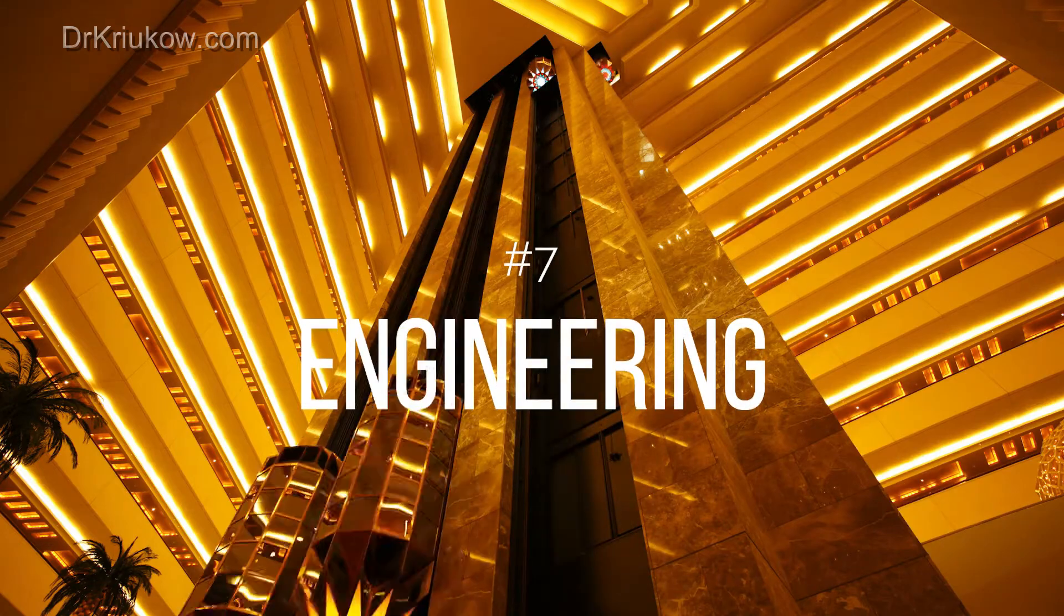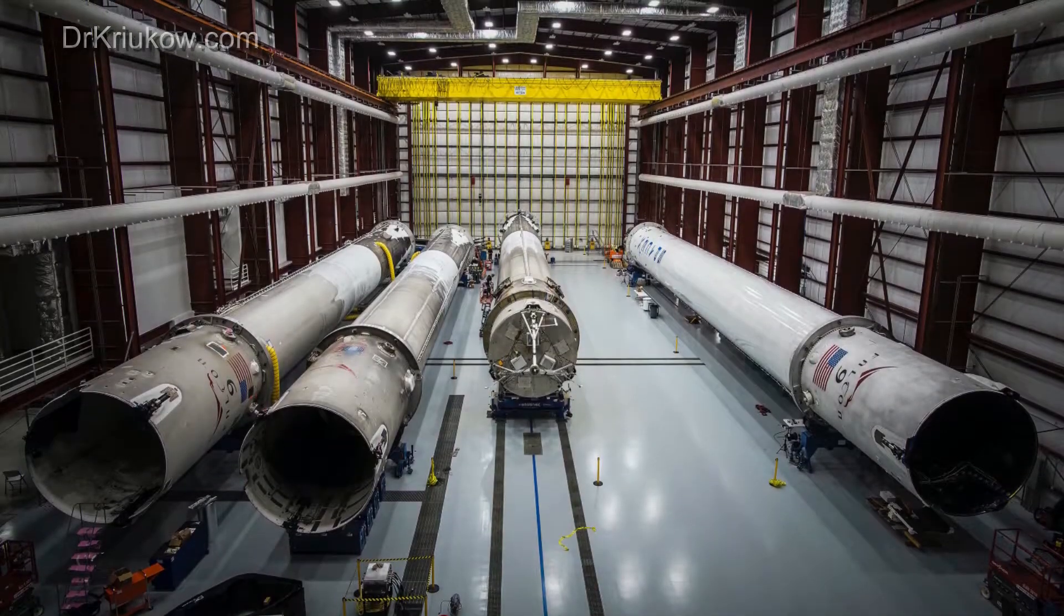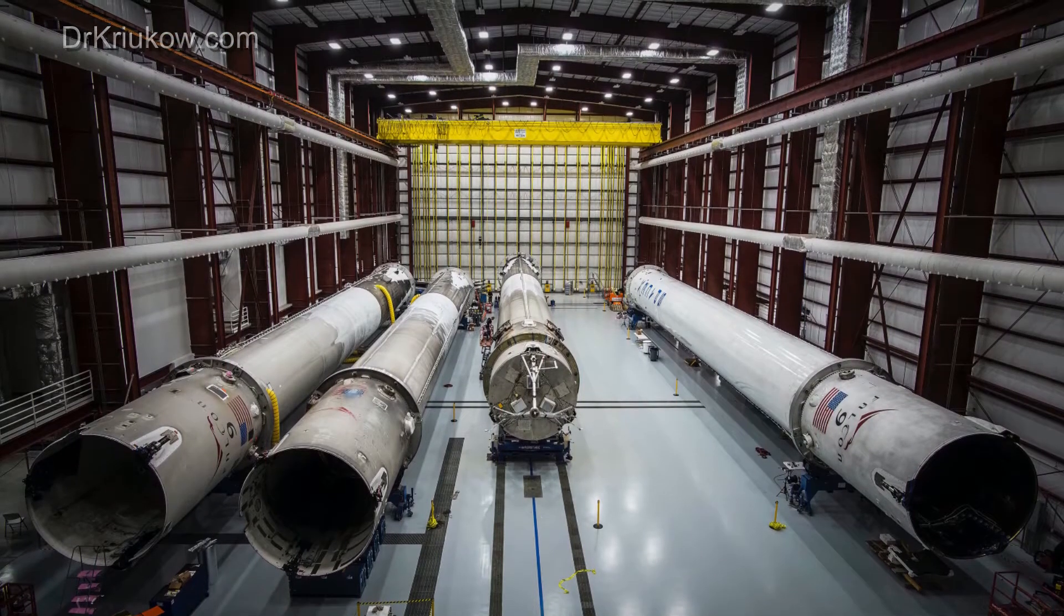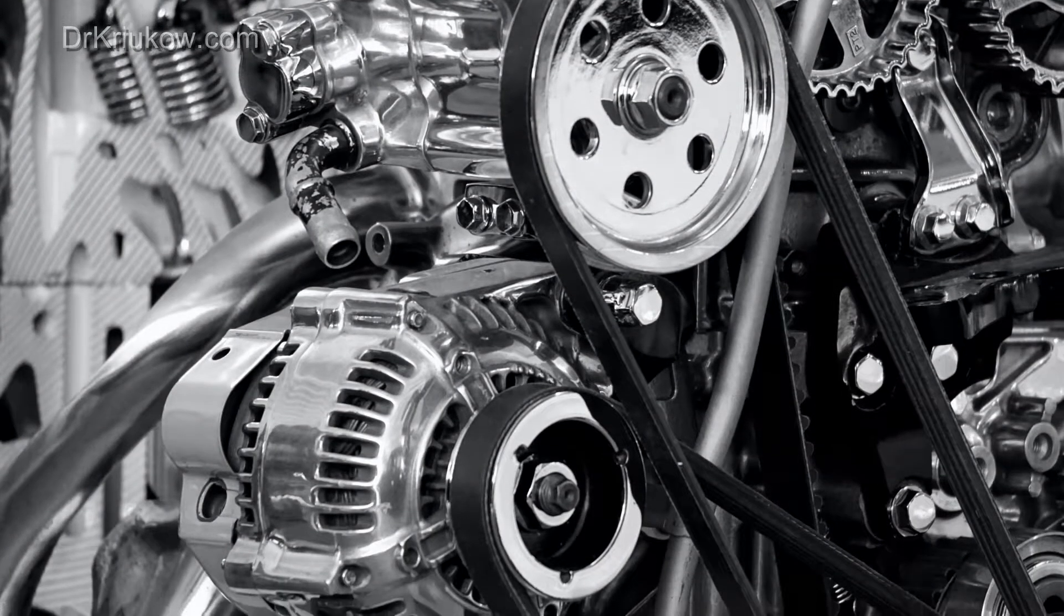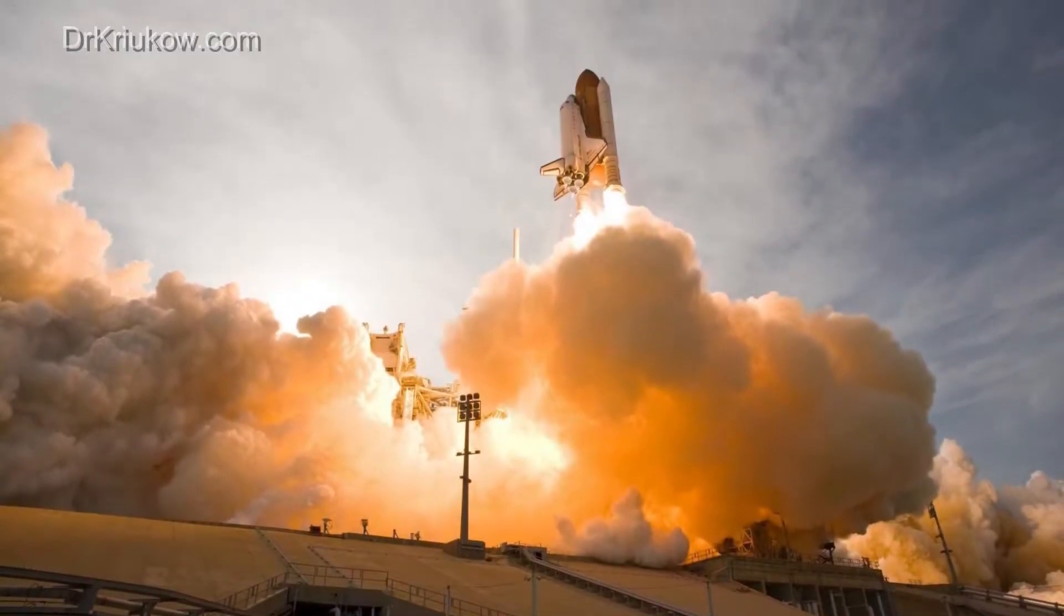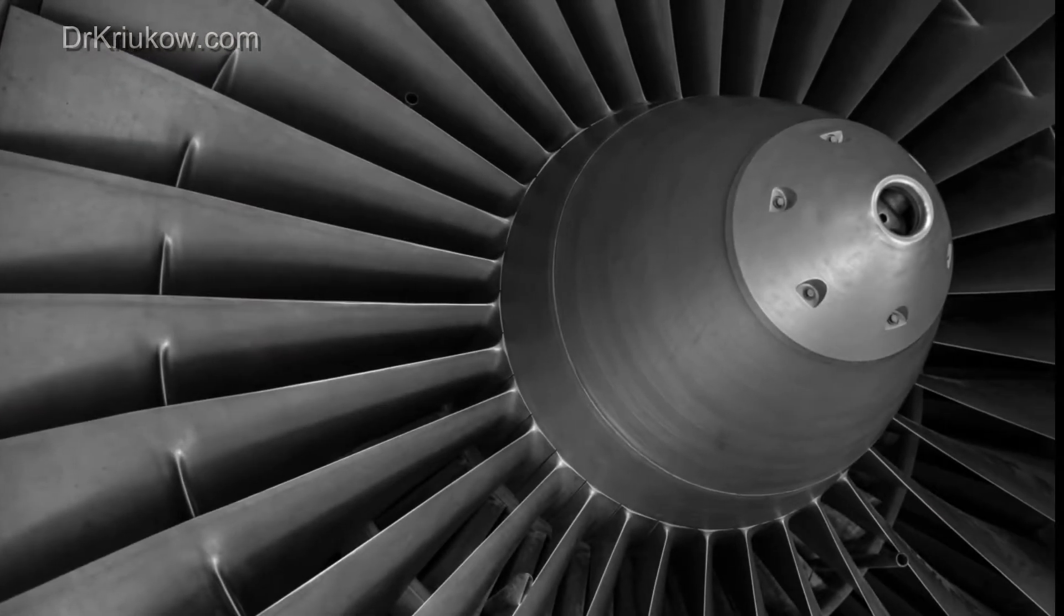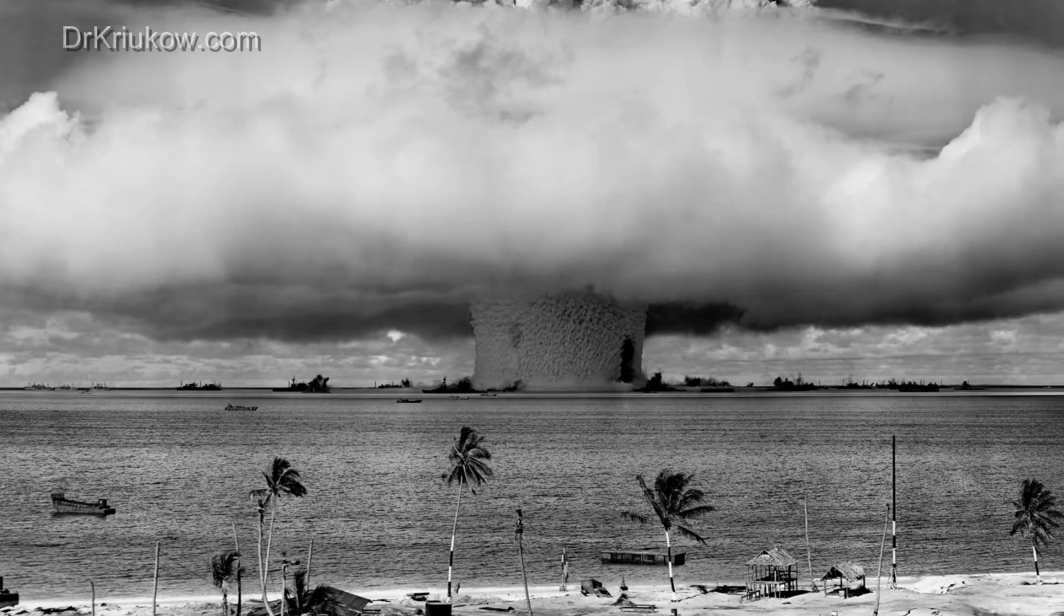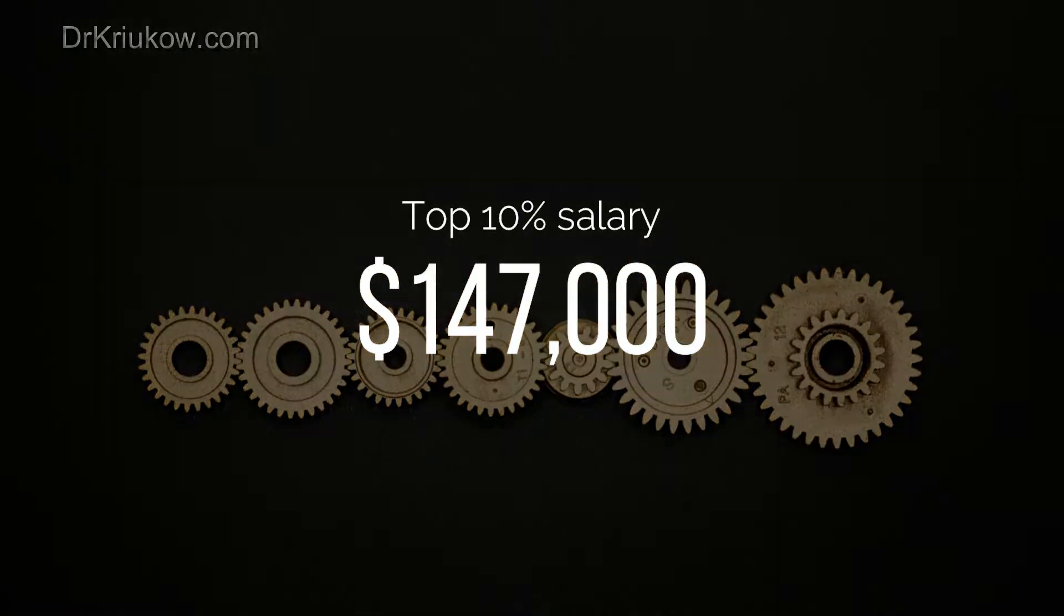Number 7 is a PhD in engineering. Generally engineering is one of the highest paying fields in the world and under this umbrella profession or term of engineering there are many other branches. The five highest paying engineering specialties are petroleum engineers, computer hardware engineers, aerospace engineers, nuclear engineers and electronics engineers. The top 10 salary of these engineers is around $147,000 a year.